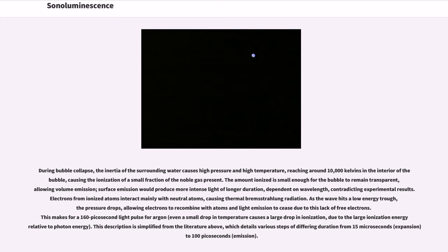As the wave hits a low-energy trough, the pressure drops, allowing electrons to recombine with atoms and light emission to cease due to this lack of free electrons. This makes for a 160 picosecond light pulse for argon. This description is simplified from the literature above, which details various steps of differing duration from 15 microseconds to 100 picoseconds.